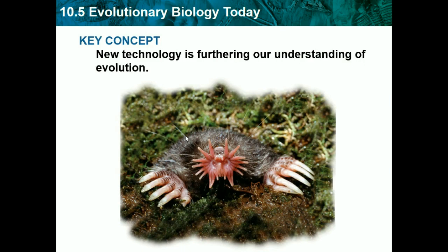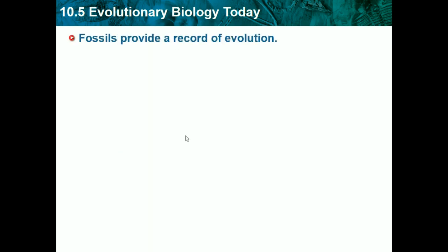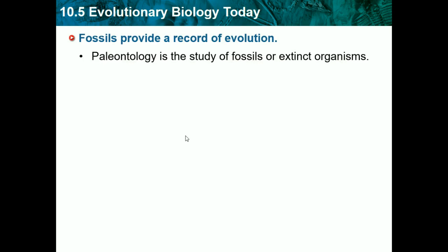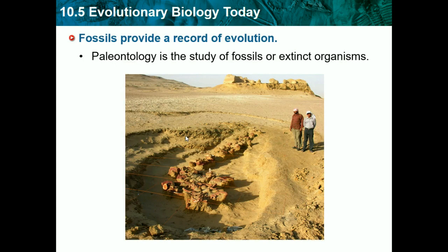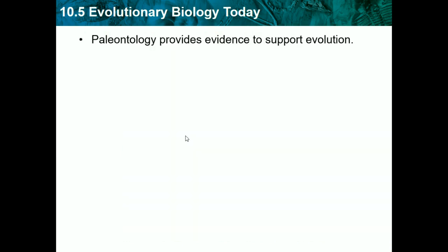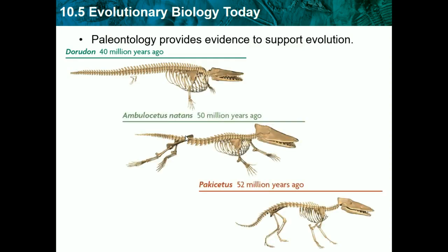10.5 is evolutionary biology today. The key concept is new technology is furthering our understanding of evolution. Fossils provide a record of evolution. Paleontology is the study of fossils or extinct organisms — they uncover the earth and find fossils to improve our study of evolution. Paleontology provides evidence to support evolution. For example, 4 million years ago there was an animal that looked like it could be a sea creature, with a long body and barely any feet. Then 5 million years ago there was another animal with legs and arms, clearly a land animal. And before that it was also a land animal, looking almost like a dog.